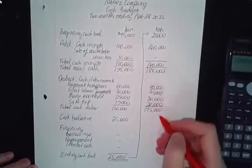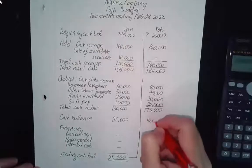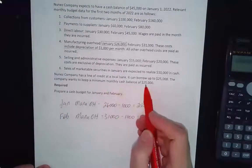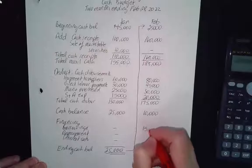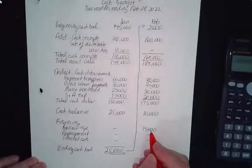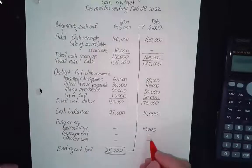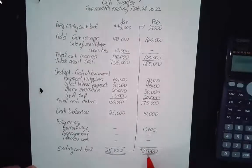$185,000 minus $175,000 leaves a balance of only $10,000. But the question requires a minimum monthly cash balance of $25,000, so we need to borrow money. We'll borrow $15,000. There's no repayment yet and no interest yet because we're borrowing at the end of the month — interest is a factor of time, so no interest costs are incurred. That gives us an ending cash balance of $25,000, which becomes the opening balance for next month.